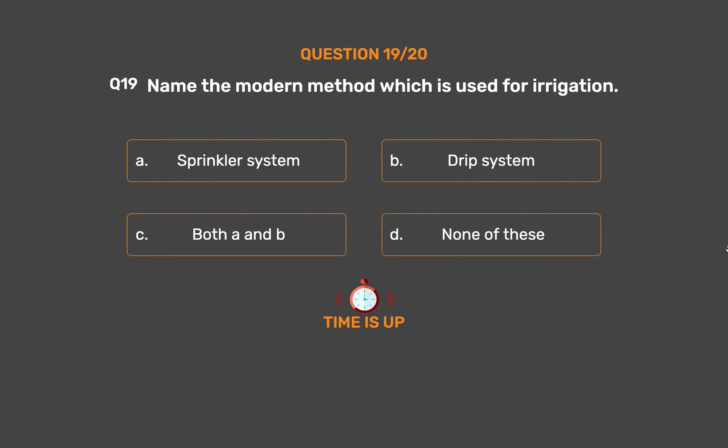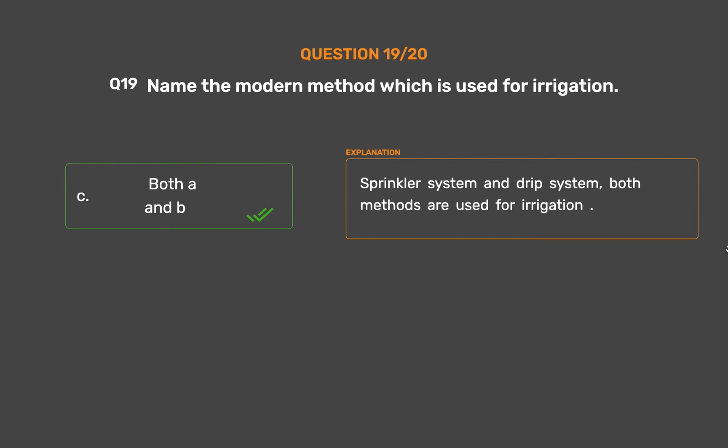The correct answer is Option C: Both A and B — sprinkler system and drip system. Both methods are used for irrigation.